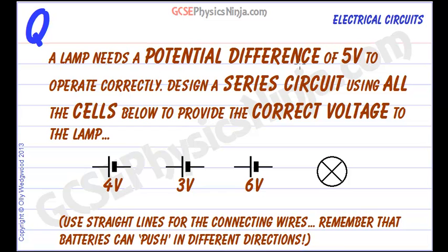A lamp needs a potential difference of 5 volts to operate correctly, so we have to design a series circuit using all of the cells below to provide the correct voltage to the lamp.